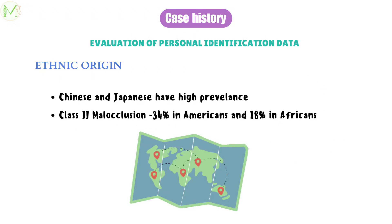Ethnic origin is recorded because Chinese and Japanese populations have a high prevalence of malocclusion. Class 2 division 1 malocclusion is more common in Americans, and bimaxillary protrusion is more common in those of African origin. Class 3 malocclusion is more common in Malaysian, Japanese, Chinese, and Filipino populations.